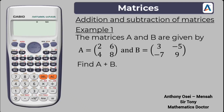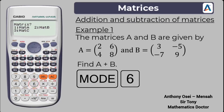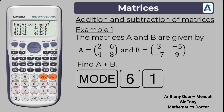To add a matrix using the calculator, first you need to put the mode of the calculator into matrix mode. Press the mode key, then press number six — that is option number six for matrix. You will get three different options. I want matrix A, so I label my matrix A in the question as matrix A on the calculator. Press one.